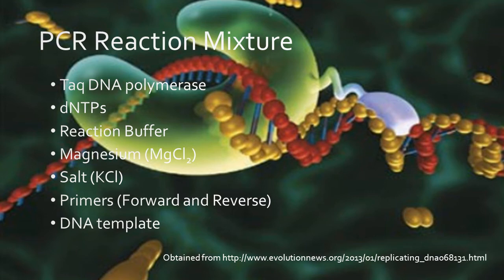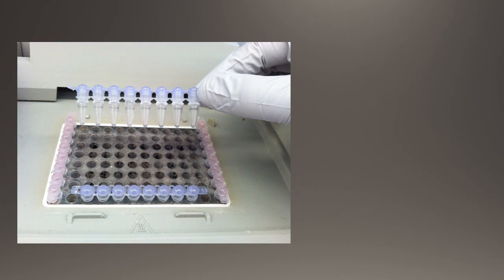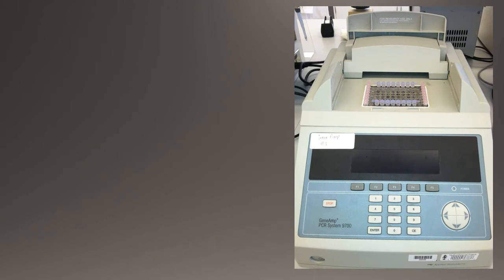The first step of the polymerase chain reaction involves obtaining a template for gene amplification from the double-stranded DNA sequence of interest. The DNA region of interest is added to the PCR reaction mixture along with the forward and reverse primers. The reaction mixture is then placed in a thermal cycler and heated to approximately 95 degrees Celsius to denature or separate the double-stranded DNA to single-stranded DNA.